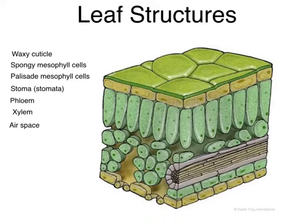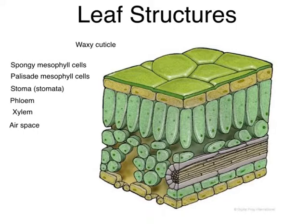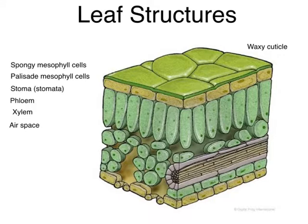The leaf is where a lot of interesting things are going on. You should have a copy of this picture, and as we go through, I'm going to identify and explain what each thing does, and you should write that down as we go through.